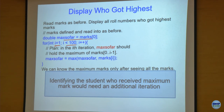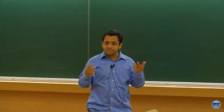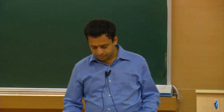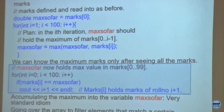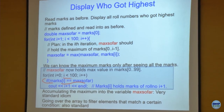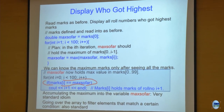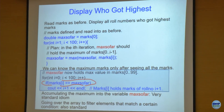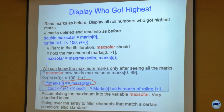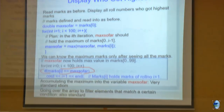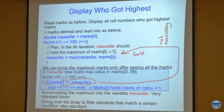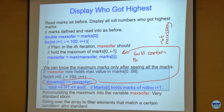You can only know the max after reading all marks, so one scan was inevitable. To identify the student who received the maximum mark, one way is an additional iteration: scan the array once more, check if marks[i] equals max_so_far, and print i+1 as the roll number that obtained the maximum marks. But that additional iteration is not necessary — you can combine the two programs into one simplified program that tracks both the maximum value and the corresponding roll number simultaneously.